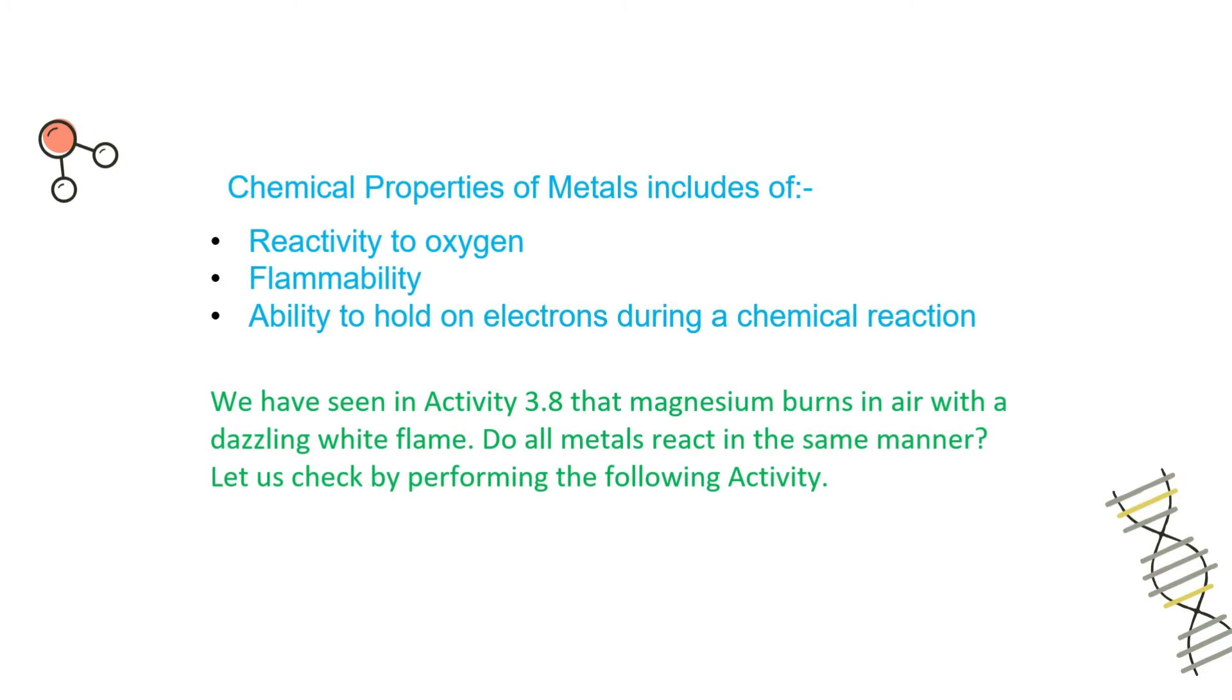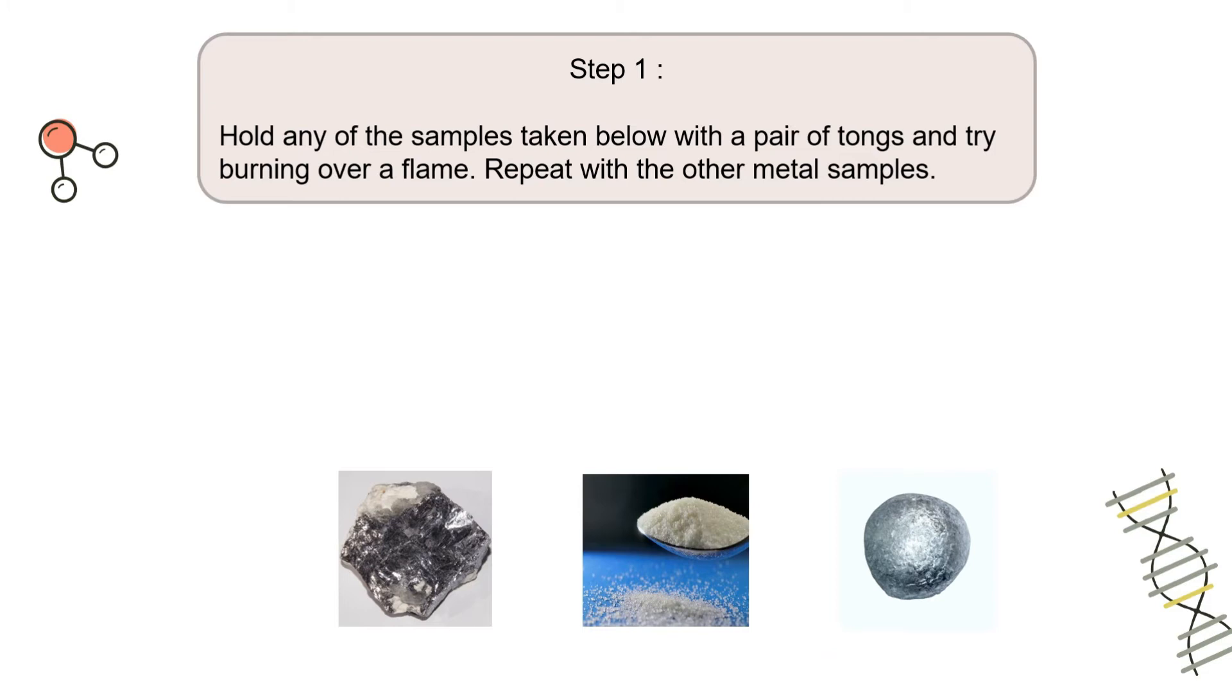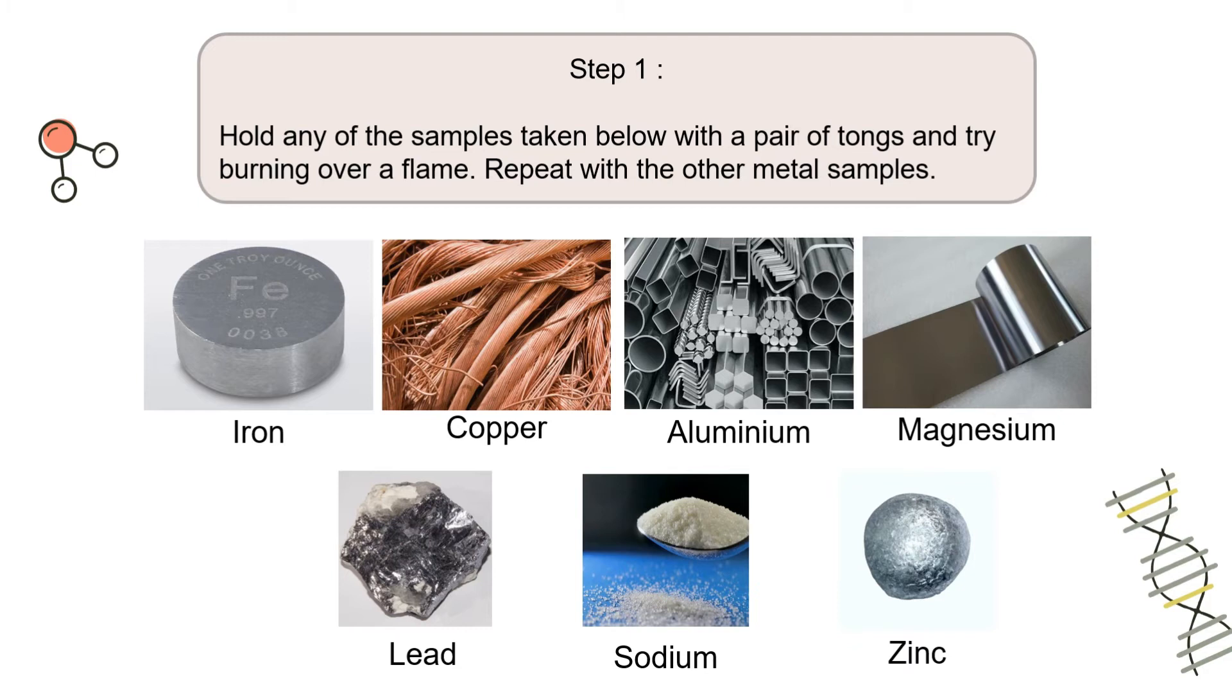We have seen in activity 3.8 that magnesium burns in air with a dazzling white flame. Do all metals react in the same manner? Let us check by performing the following activity, Activity 3.9. Step 1: Hold any of the samples taken below with a pair of tongs and try burning over a flame. Repeat with other metal samples. Now we have 7 metals with us, but we are going with magnesium. We have a strong reason to go with magnesium here. We have also took magnesium in our activity 3.8.